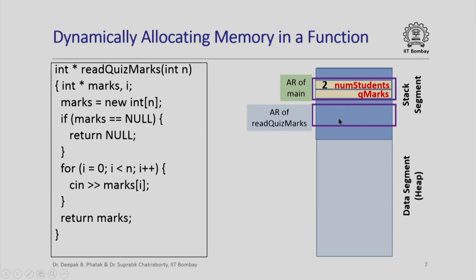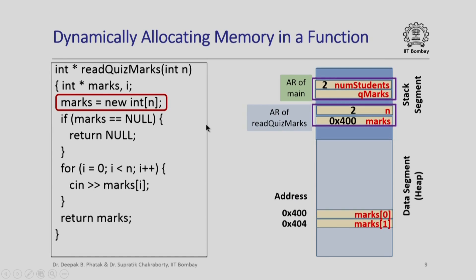When I call read_quiz_marks, an activation record for it will be pushed into the call stack. The stack is growing from top to bottom. In the activation record of read_quiz_marks, I will have space for the formal parameter n, which has the value 2, and space for marks. When I execute the dynamic allocation statement, I am allocating an array of size 2 in the data segment. Addresses 0x400 to 0x403 store the first element and 0x404 to 0x407 store the second element, and the address of the first element is copied to marks.